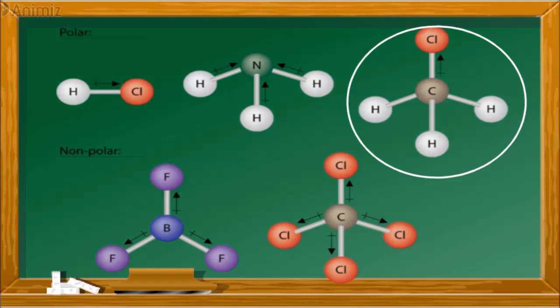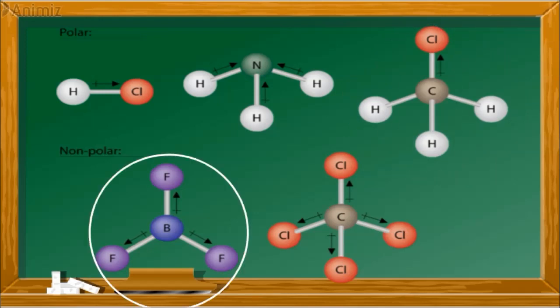But consider boron trifluoride. BF bond is very polar, actually ionic. 4 minus 2.2 is the electronegativity difference. And there are 3 polar bonds. But look at the geometry. The net charges are canceling out each other. So having 3 polar bonds but still the molecule is nonpolar. Same is the case with carbon tetrachloride.